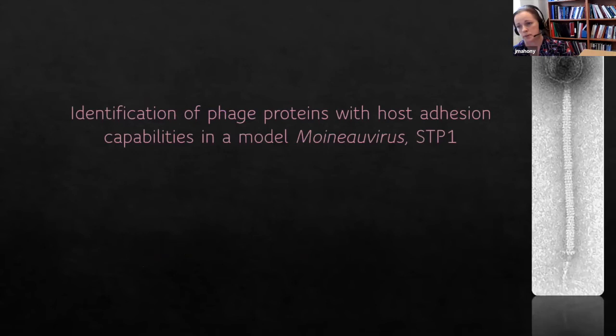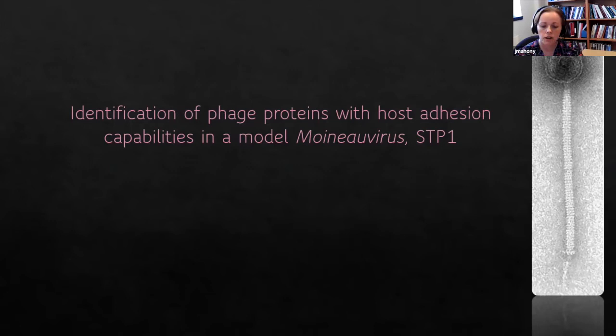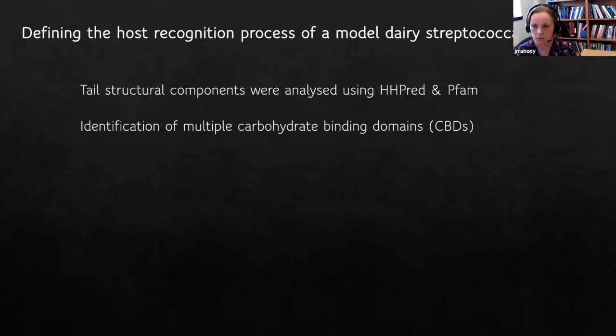From the phage perspective, we're very interested in the phage proteins that bind to the host — the host adhesion device. For this we took a model phage called STP1, a moinovirus, one of the dominant groups of dairy streptococcal phage. We could easily identify the tail structural components, but the annotations weren't great, so we set out to understand exactly who was doing what job in the tail tip region involved in interactions with the host.